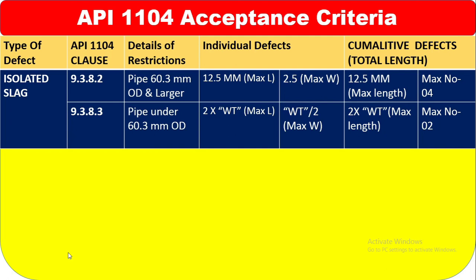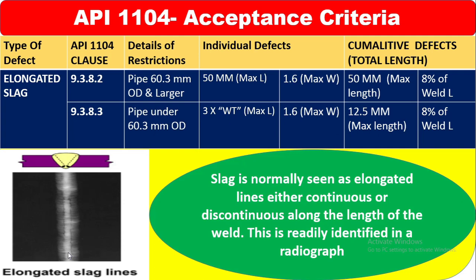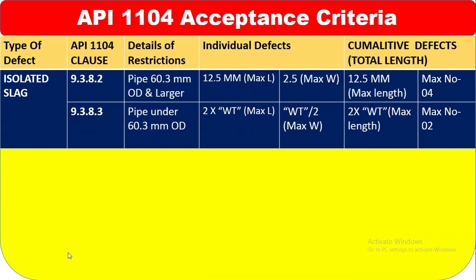Now for isolated slag — clauses 9.3.8.2 and 9.3.8.3. For pipe 60.3 mm OD and larger, the maximum length is 12.5 mm and the maximum width is 2.5 mm for individual defect. For pipe under 60.3 mm OD, the individual defect maximum length is 2 times wall thickness and maximum width is wall thickness divided by 2.